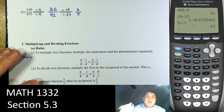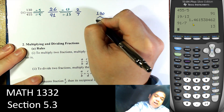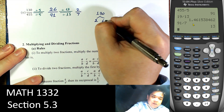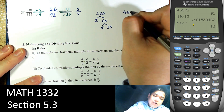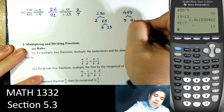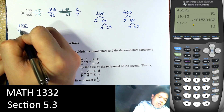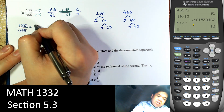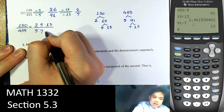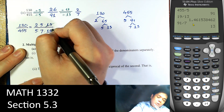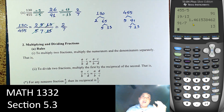Another way to do this is prime factoring. 130 is 2 times 5 times 13, and 455 is 5 times 7 times 13. Then we cross out one 13 and one 5 from each, leaving 2 over 7. That's another way to reduce.